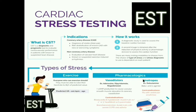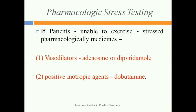Next is pharmacological stress testing. This is performed for patients who have heart disease but cannot perform exercise stress testing due to knee problems, joint problems, or other reasons. In pharmacological stress testing, the technician administers certain drugs to the patient where stress is induced without performing any exercise. When a person exercises, metabolic rate increases and the body needs more oxygen and nutrients, requiring more blood pumping from the heart.